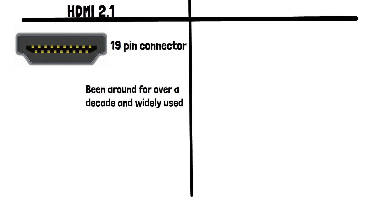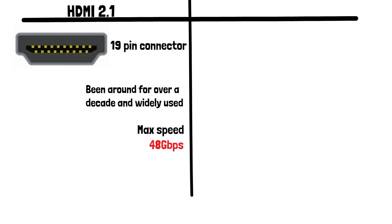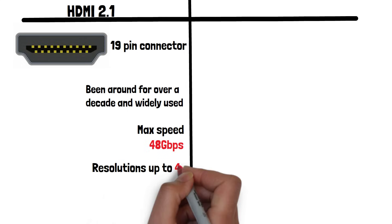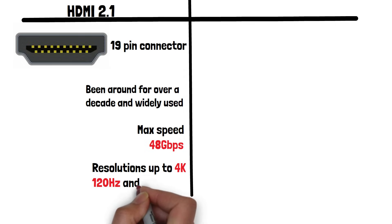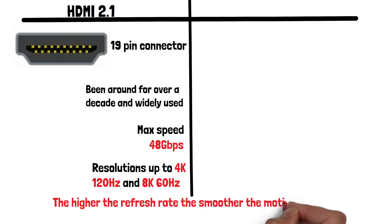HDMI 2.1 can transmit at a speed of 48Gbps and supports resolutions up to 4K at 120Hz refresh rate, and 8K at 60Hz, as well as high dynamic range content. The higher the refresh rate, the higher amount of frames per second are displayed on screen, which is particularly useful for gaming as it leads to smoother motion in the image.